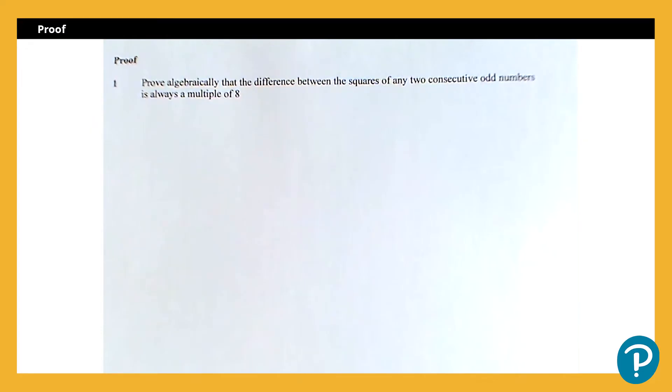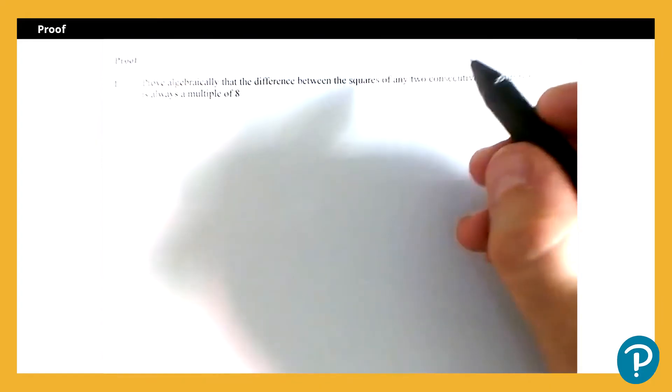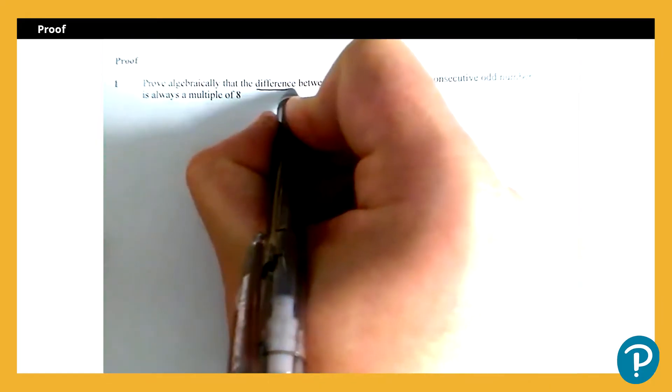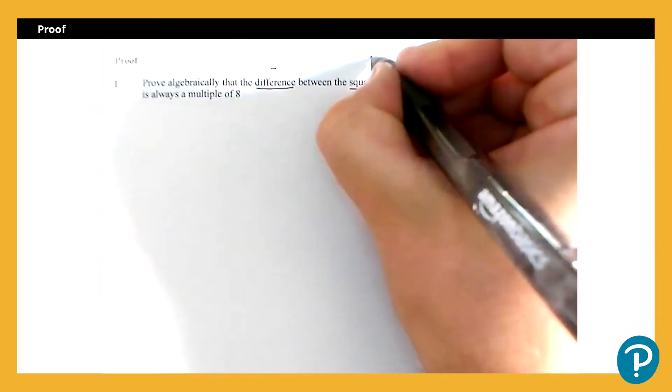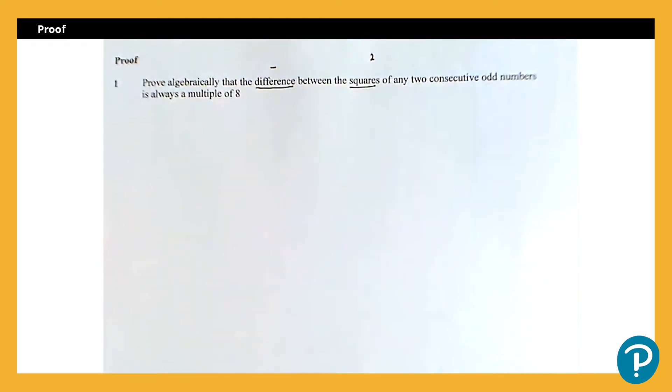So here we're going to look at proof by deduction, using an algebraic argument. If we read the question, it says prove algebraically that the difference between the squares of any two consecutive odd numbers is always a multiple of eight. The most important thing here is understanding the language. Difference means we're going to be doing some taking away. Squares means we're going to be squaring some things.